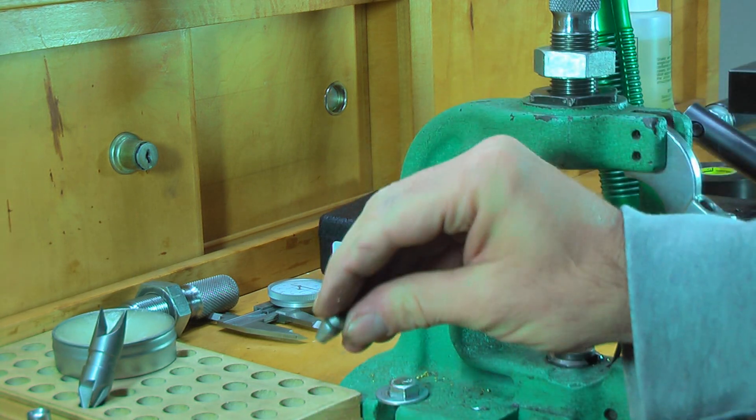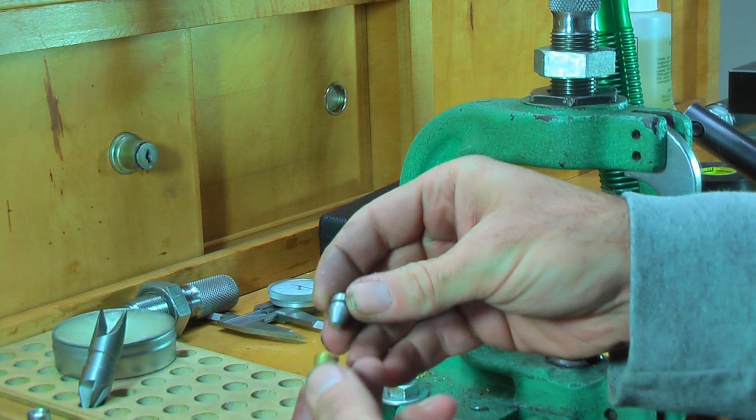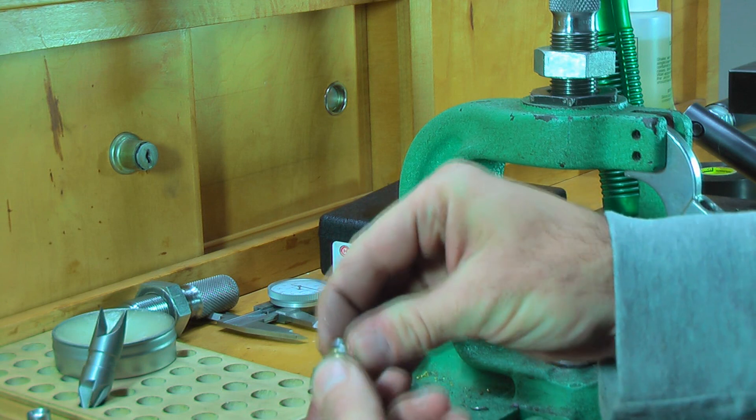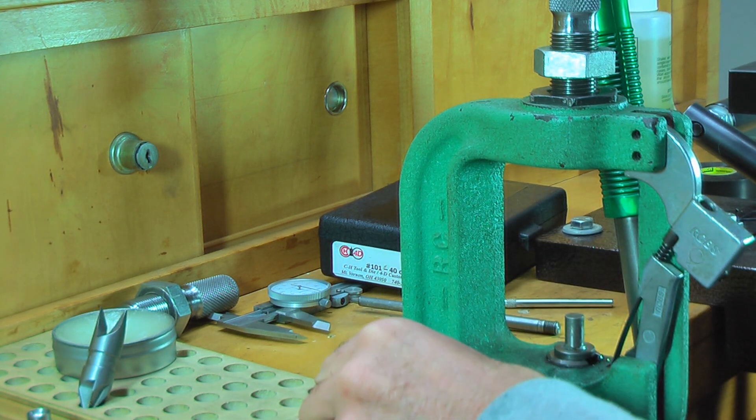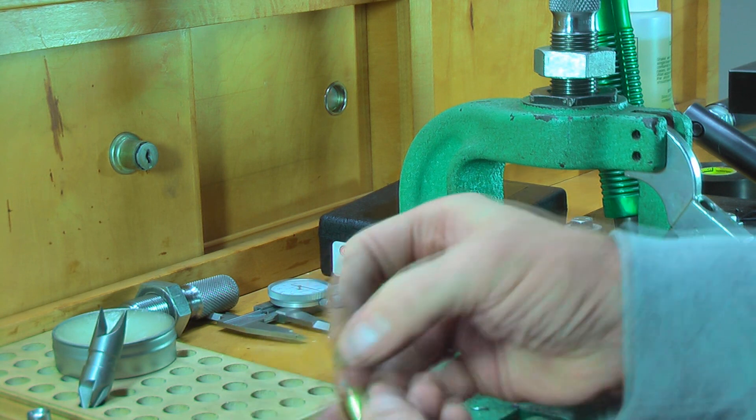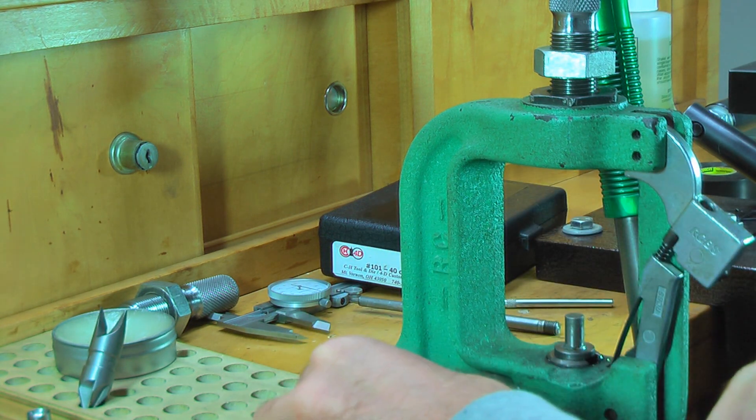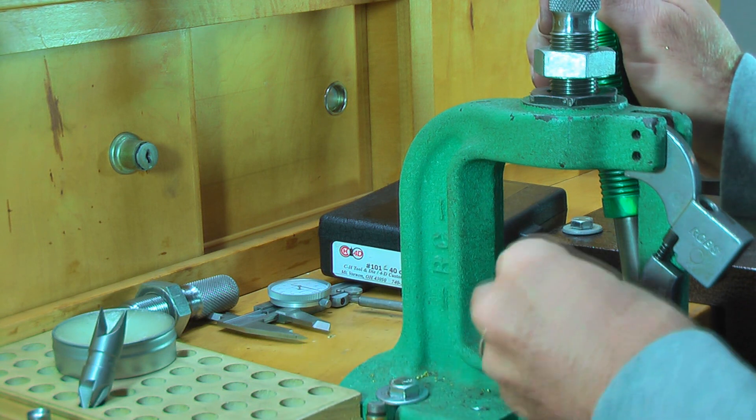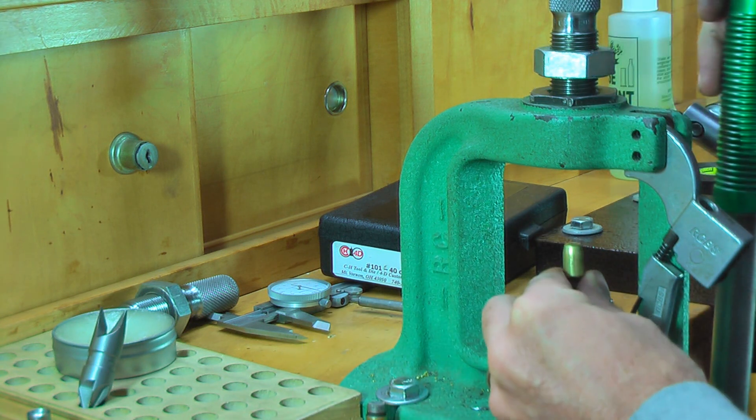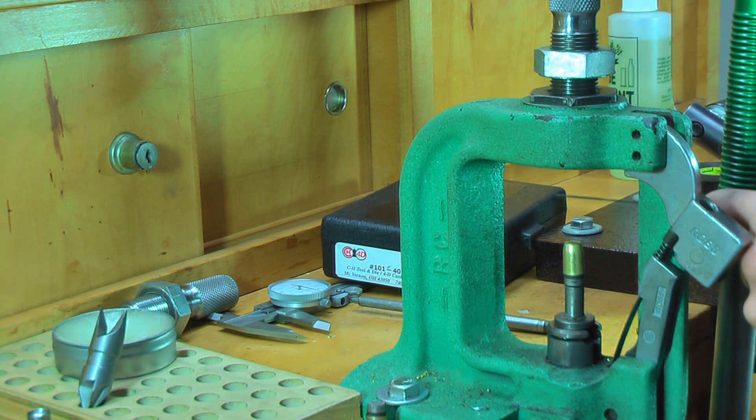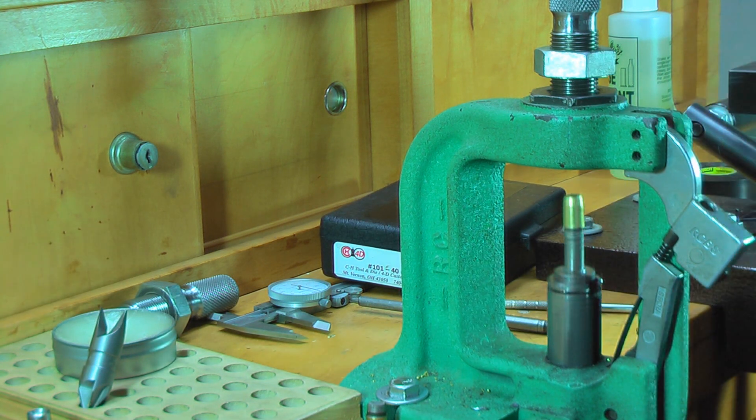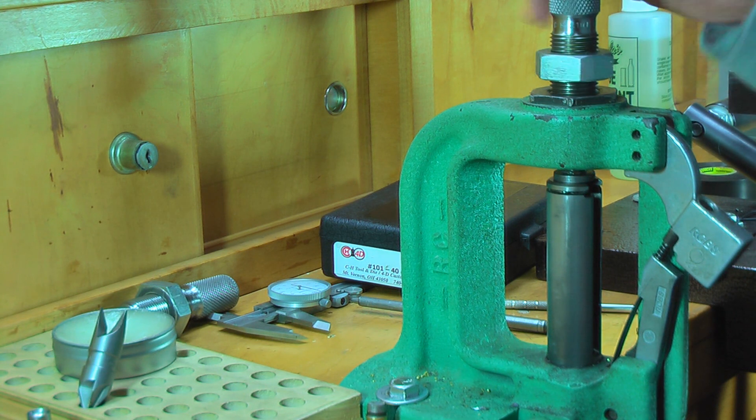Now we take the bullet, the 125 grain truncated cone. We put it in point first, just like that. See how that works? Drop it in. We're going to put the core like that. And the base is going to go up. Run that in there. And we're going to run it down until we feel resistance.